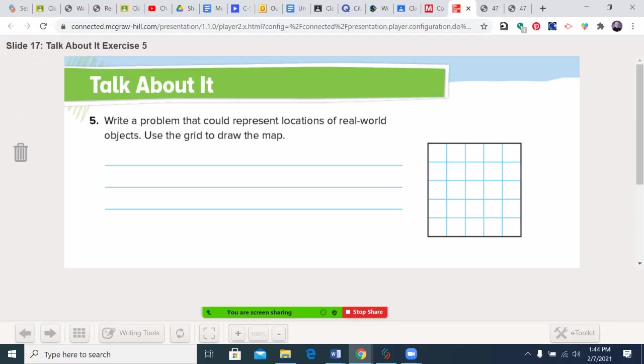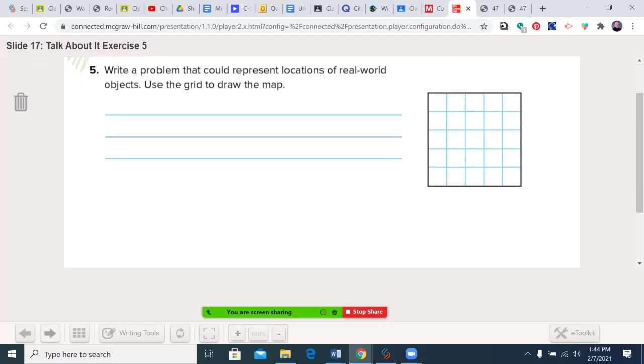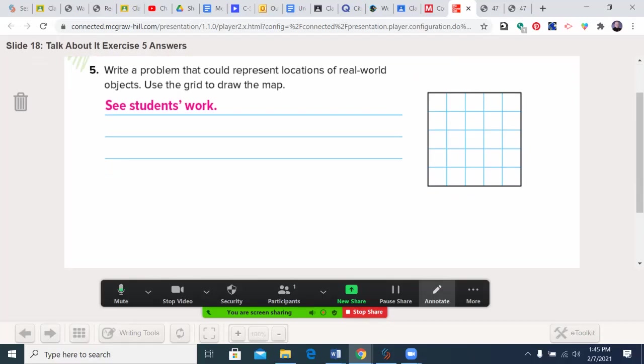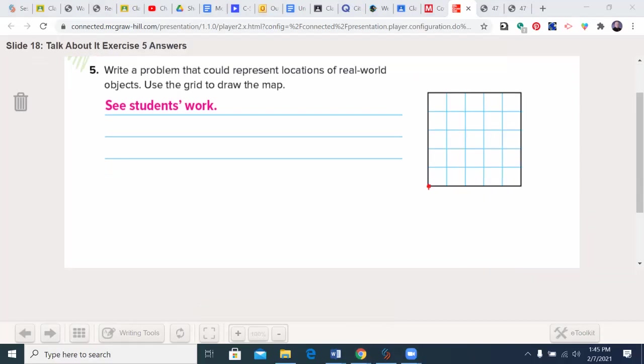Write a problem that could represent locations of real world objects. Now this one would totally be up to you. Let's see what they gave me here. Yeah, I could start out with something like: I went home, I had to go four blocks north to the mall, three blocks east to the gas station.